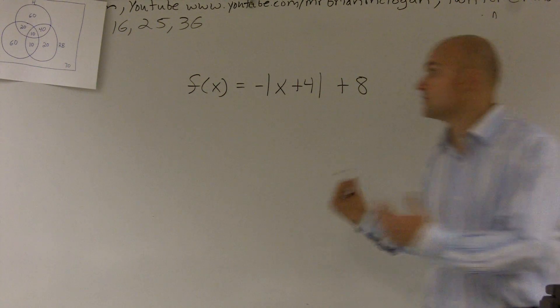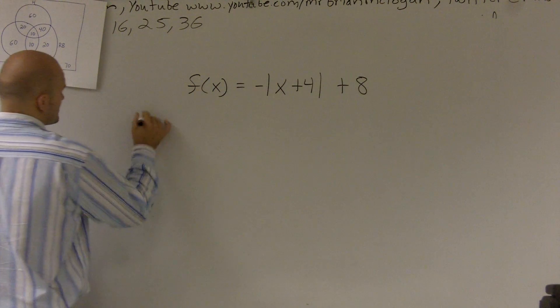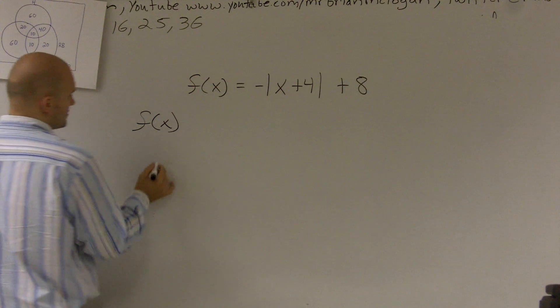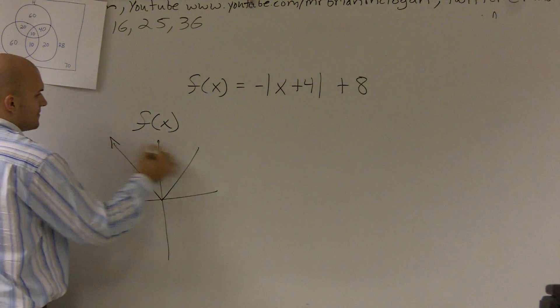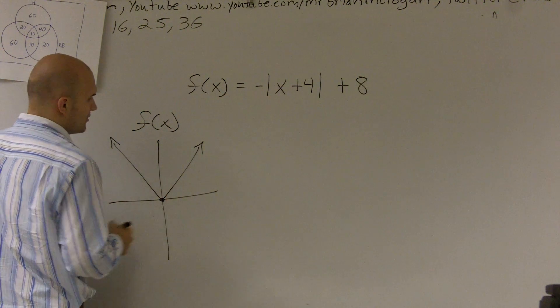First thing we obviously have to know is what is our parent graph? So this is an absolute value function, which is like a big, nice V. And it makes that V at 0,0.